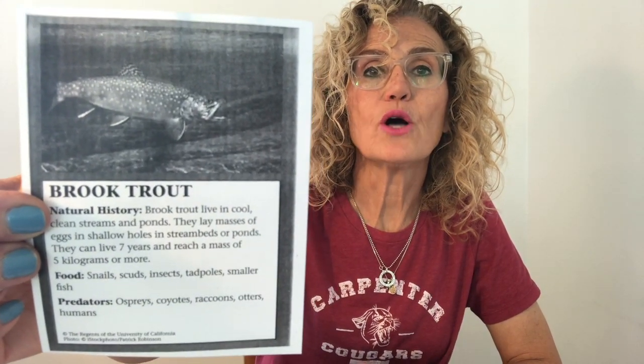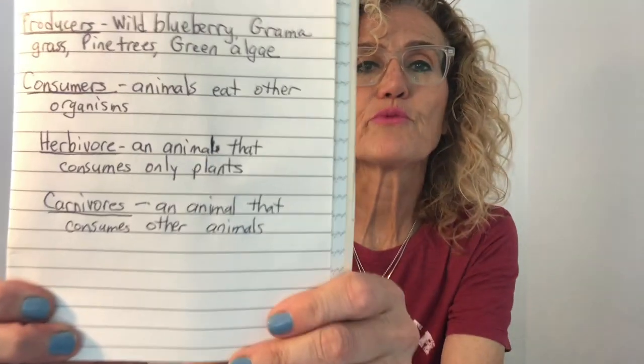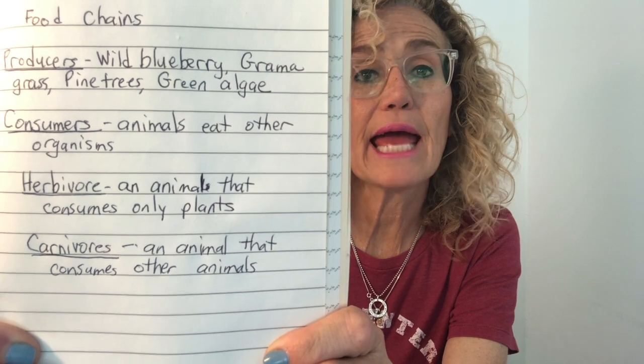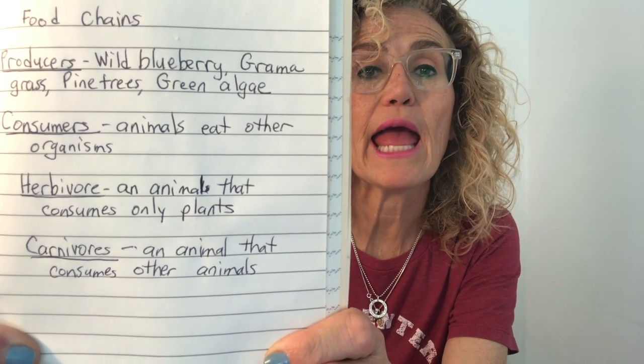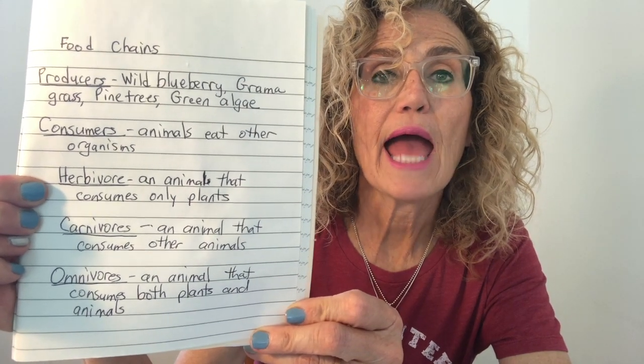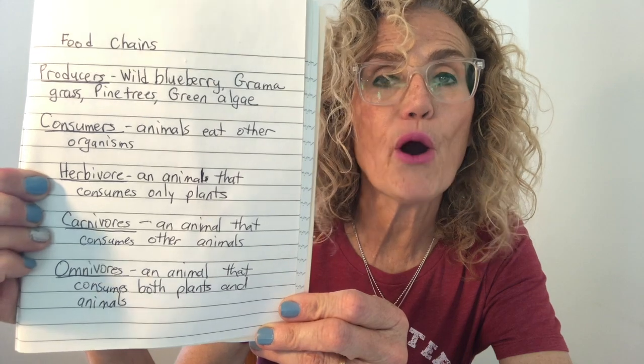Now let's look at animals that eat only other animals. I found the red-tailed hawk, the great blue heron, and the brook trout — they eat only other animals. In your notebook write: a carnivore is an animal that consumes only other animals. I also have some animals that eat both plants and animals — a robin, a coyote, and a black bear. They are omnivores. An omnivore is an animal that consumes both plants and animals.